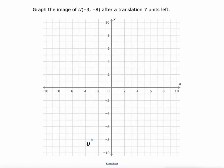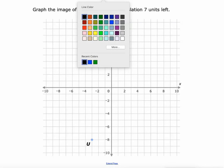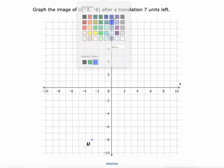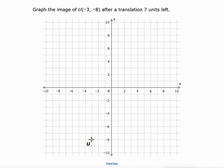Graph the image of point U at negative 3, negative 8 after a translation 7 units left. There's a couple ways we could think about this one. The first way would be, let's use a ray here. 7 units left.